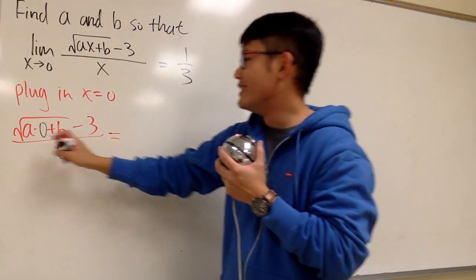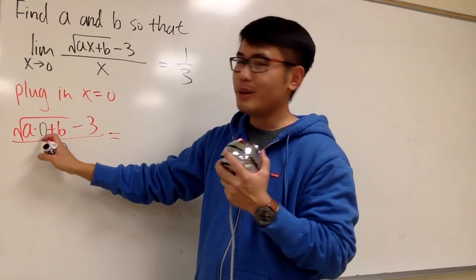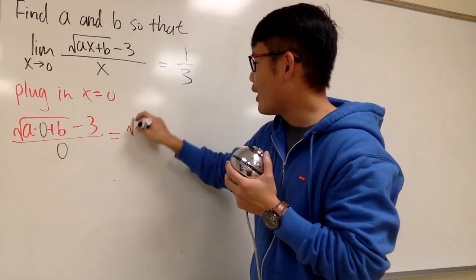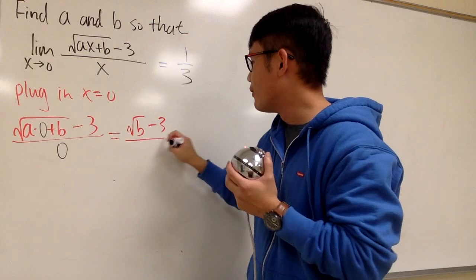And of course, we can simplify. a times 0 is 0, so we have square root of b minus 3, all over 0.